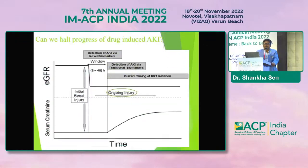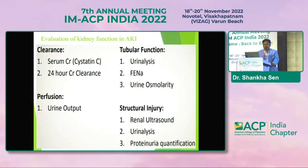Can we halt the progress of drug-induced AKI? Yes — there is a window period. From the initial renal injury to detection, there is a window of 8 to 48 hours. But creatinine will start rising only after 48 hours, so we can't wait for that. We need better biomarkers to pick up injury early. Cystatin C is available for AKI — instead of relying solely on serum creatinine.